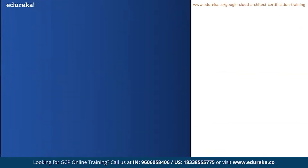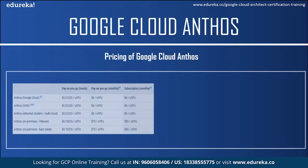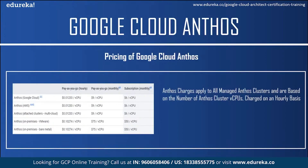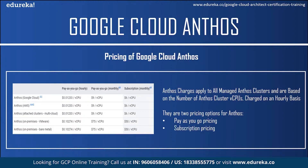Now let us take a look at the pricing of Anthos. Anthos charges apply to all managed Anthos clusters and are based on the number of Anthos cluster virtual CPUs charged on an hourly basis. There are two types of pricing options: the first is a pay-as-you-go pricing model where you are billed for Anthos managed clusters as you use them — useful if you want to try Anthos or use it infrequently. The next option is the subscription pricing, which provides a discounted price for a committed term. Your monthly subscription covers all Anthos deployments irrespective of environment at their respective billing rates.